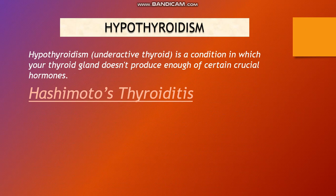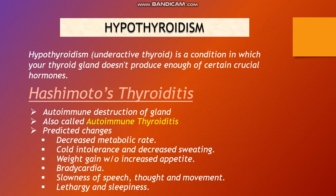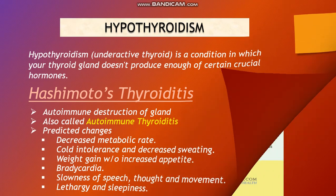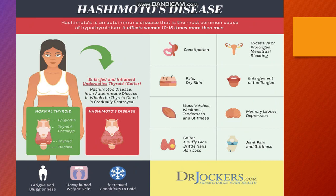Hashimoto's thyroiditis is an autoimmune disorder involving destruction of the gland, also called autoimmune thyroiditis. Predicted changes include decreased metabolic rate, cold intolerance, decreased sweating, weight gain with increased appetite, bradycardia, slowness of speech, thought and movement, lethargy, and sleepiness. Hashimoto's is an autoimmune disorder and the most common cause of hypothyroidism.